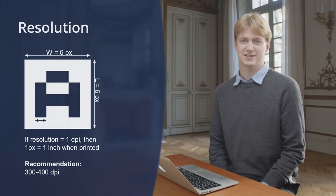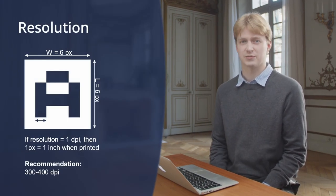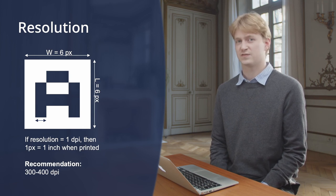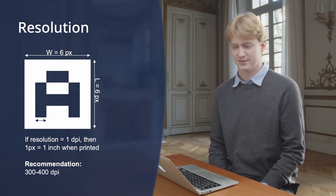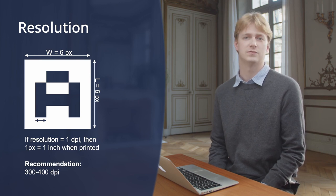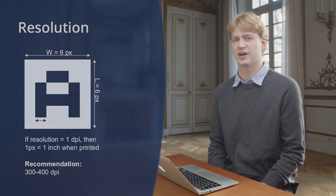In digital pictures, everything starts with tiny dots called pixels. The pixel density is measured in DPI, dots per inch. Images for ATR purposes should best have between 300 and up to 400 DPI for an A4 page.